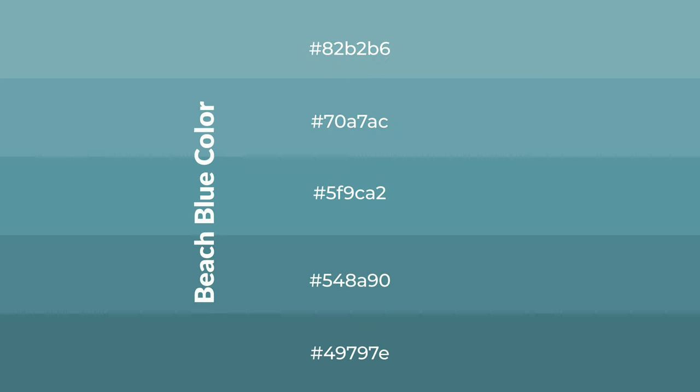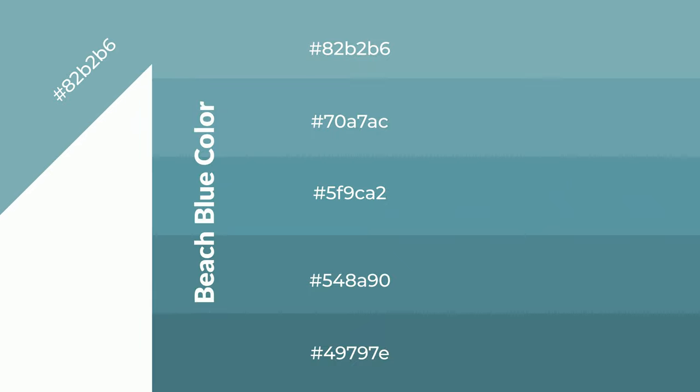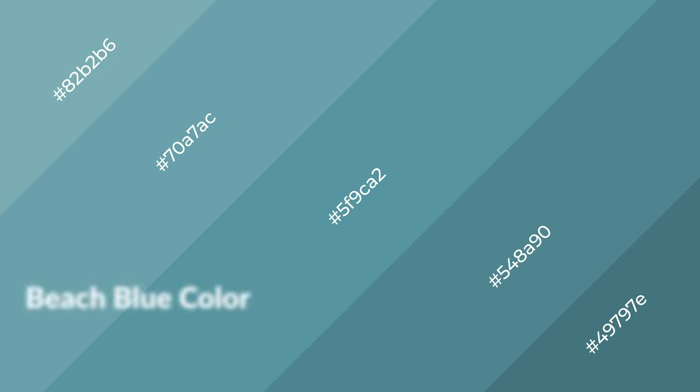To generate shades of a color, we add black to the color, and it is used in patterns. 3D effects, layers and shades create depth and drama.